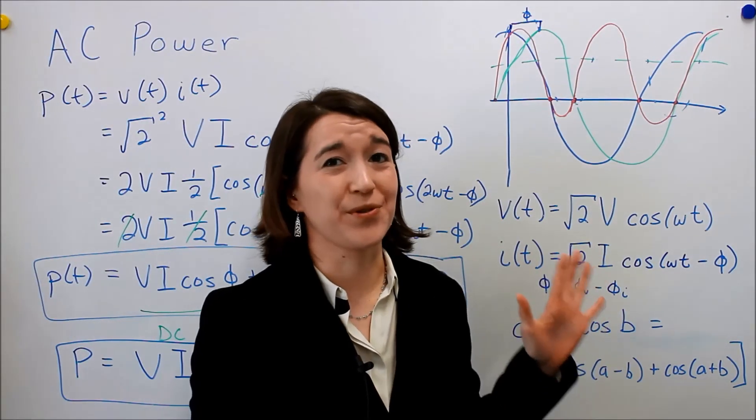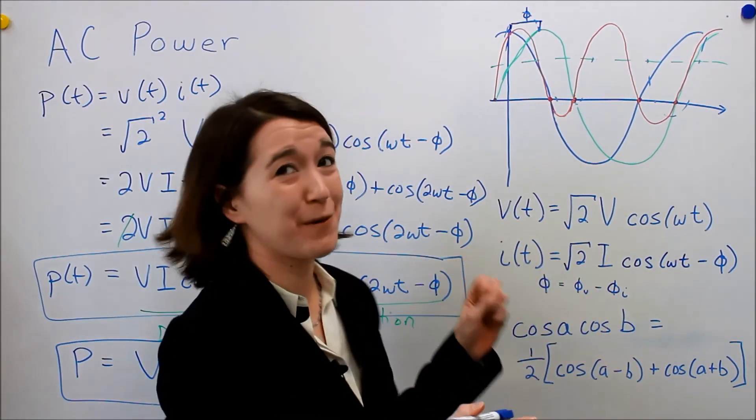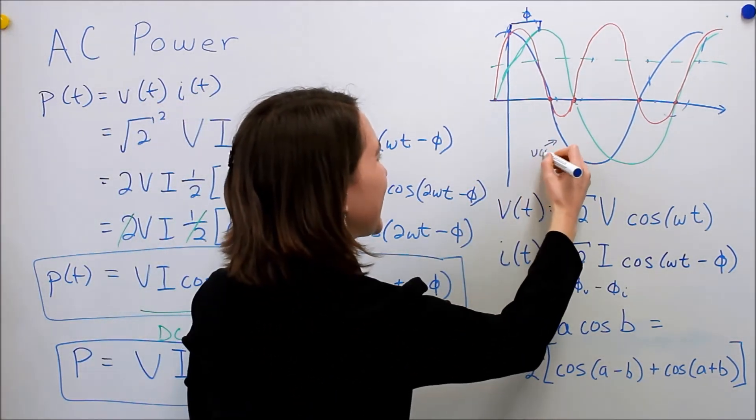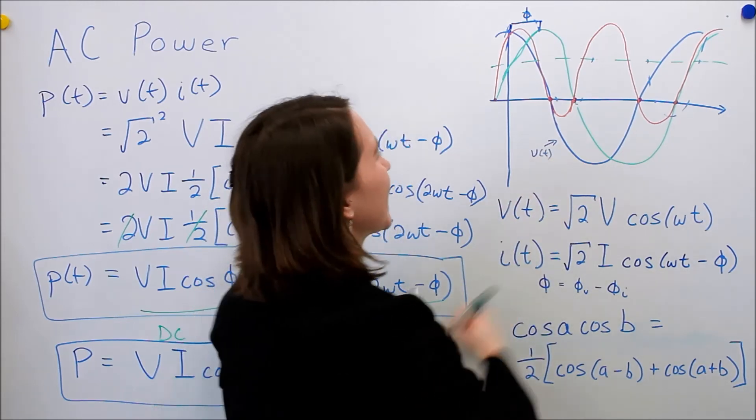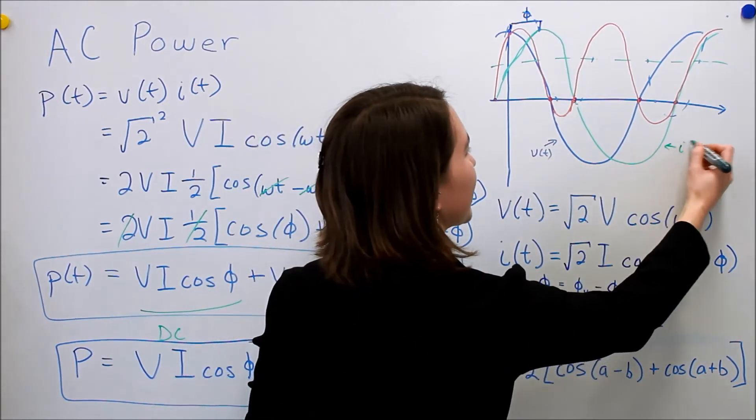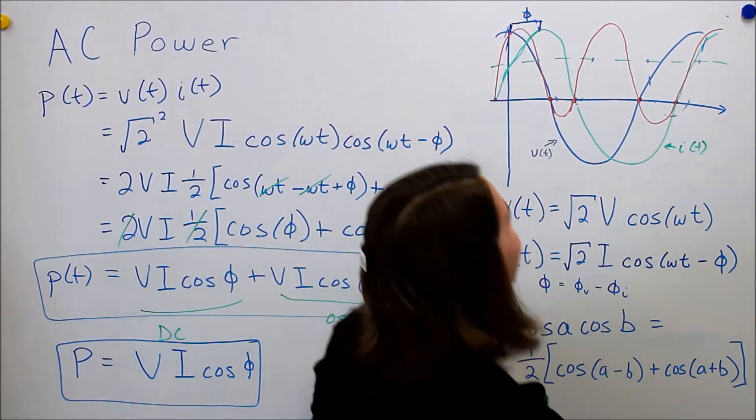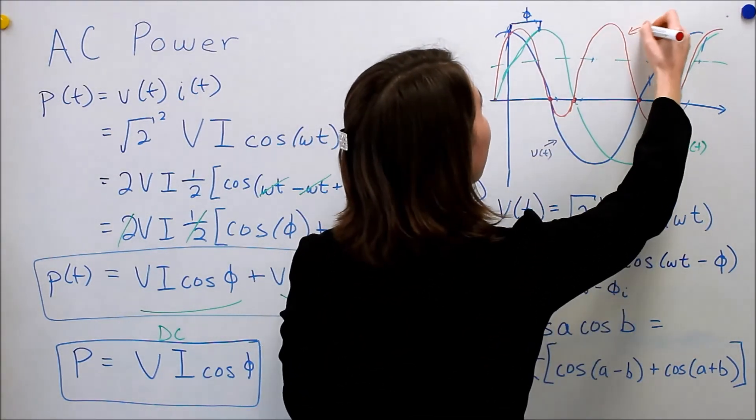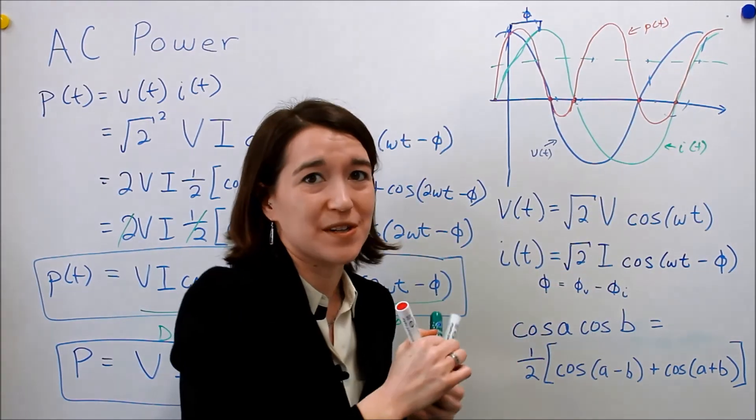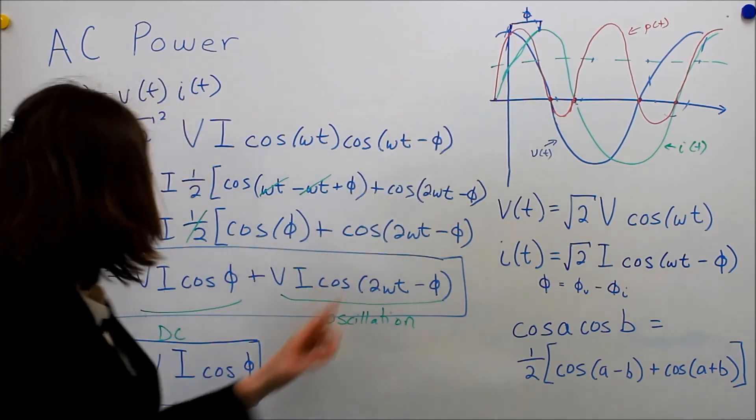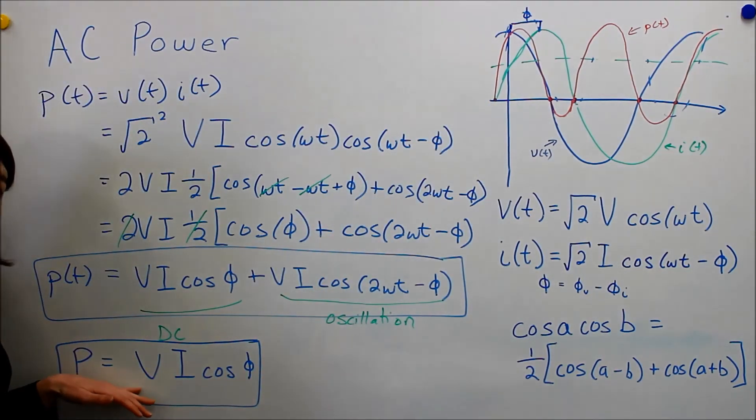So I'm still the world's worst drawer, but I went back and attempted to make this a little bit better. So if the blue is our v of t voltage waveform, green is our current waveform, then I made a better representation of the power, instantaneous power, p of t. I also wanted to mention that this average value here that's shown, this is the average power.